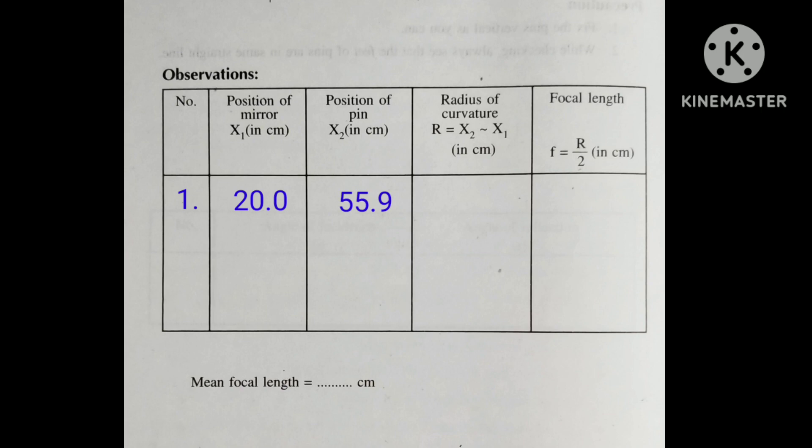The difference between the positions of the mirror and pin gives the radius of curvature of the mirror. And half of the radius of curvature gives the focal length.